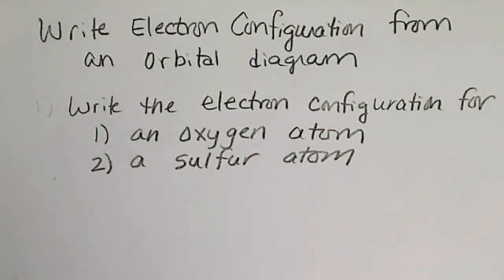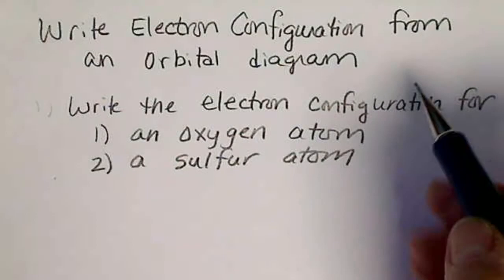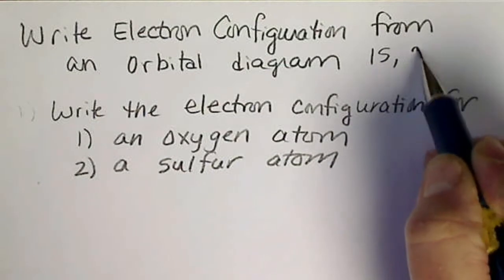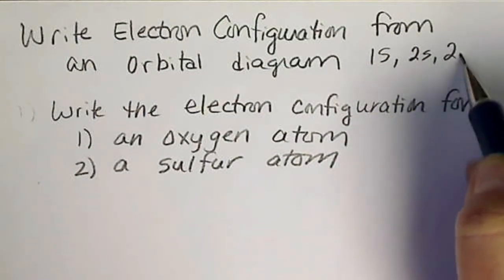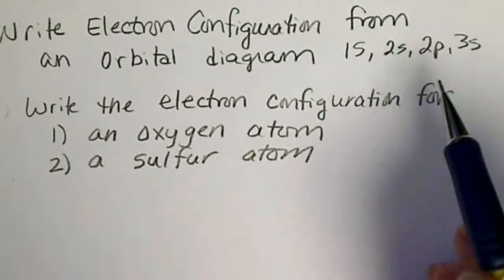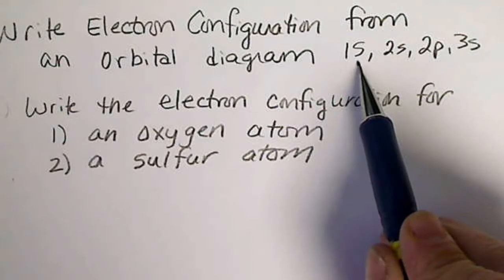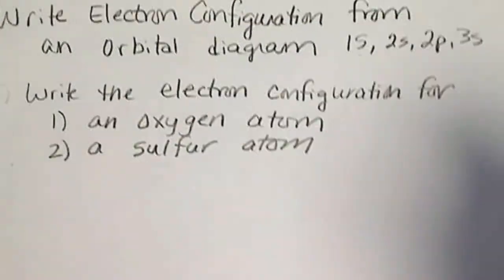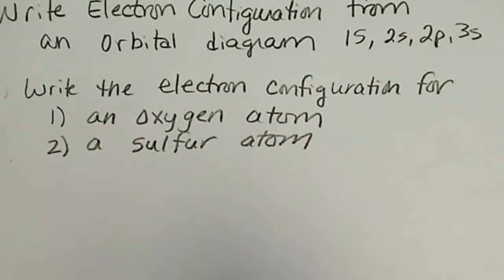In this video we're going to write an electron configuration from the orbital diagram. Remember when drawing the orbital diagram, we list the 1s orbital, then 2s, then 2p, then 3s, and so forth. The s subshell has 1 orbital, the p subshell has 3 orbitals. We'll do this for oxygen and sulfur.